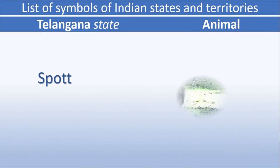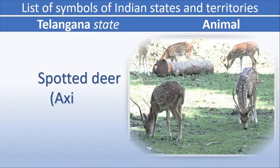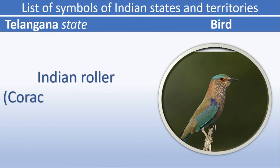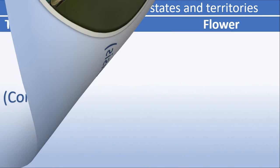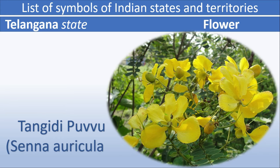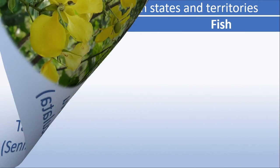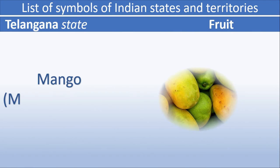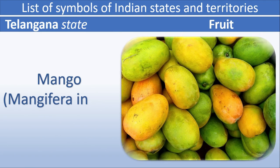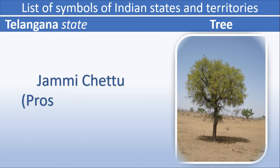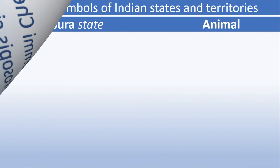Telangana animal: Spotted Deer. Telangana bird: Indian Roller. Telangana flower: Tangedu. Telangana fish: Korameenu. Telangana fruit: Mango. Telangana tree: Jammichettu.